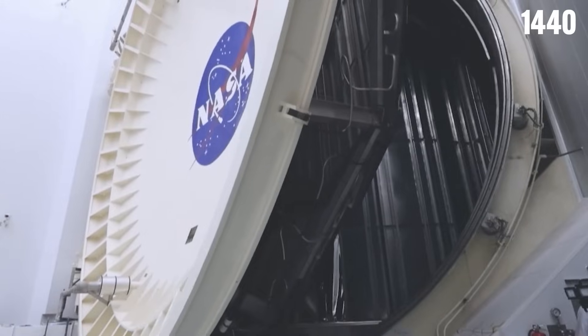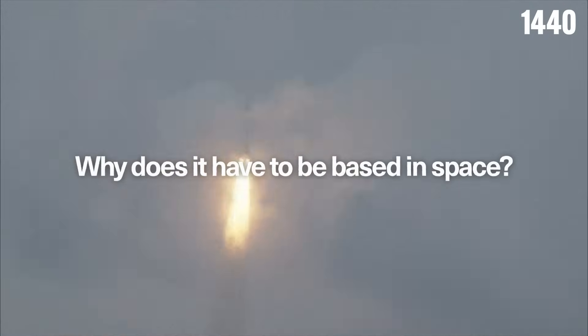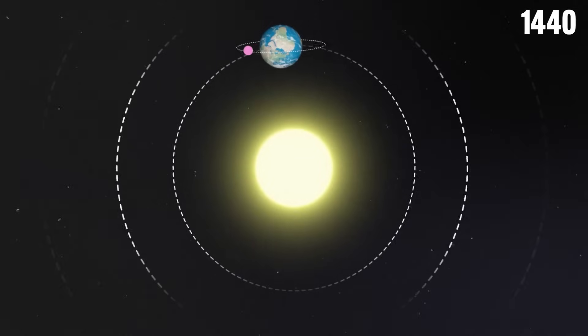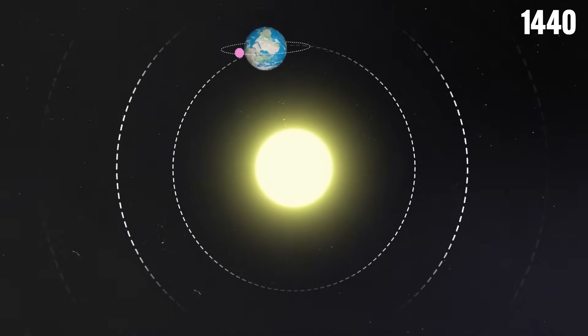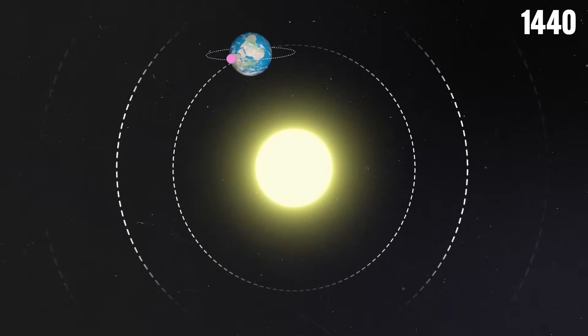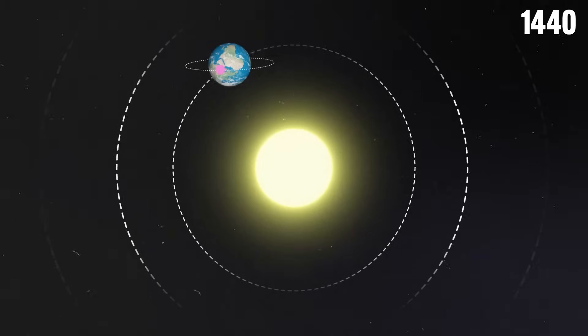Now, why can't NASA build this telescope on Earth? Why does it have to be based in space? Well, there's a simple answer for this, and it has to do with the fact that telescopes in space bypass Earth's dense light filtering atmosphere.